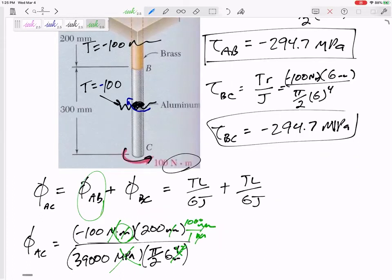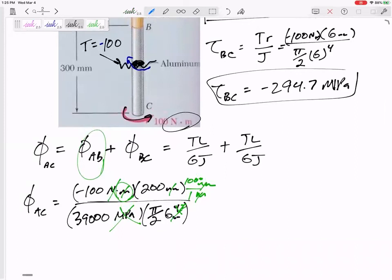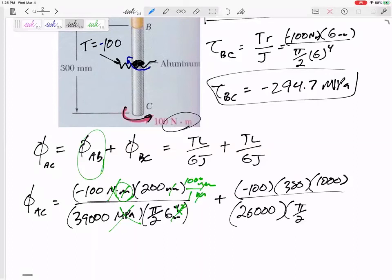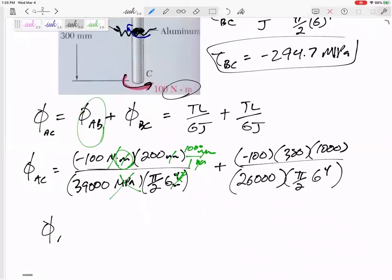Make sure all those units cancel out. And if this were in English units, you know, pounds and feet, be careful. Some of those might be in KSI, kips per square inch, so be careful. You all know I'm not afraid to put English units there. So that is that one, and then the next one is negative 100, its length 300, 1000 is the unit conversion, 26,000 MPa, π/2 times 6 to the 4th power. So the angle of twist is negative 0.819 radians.